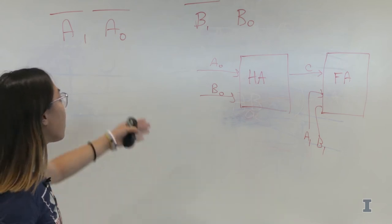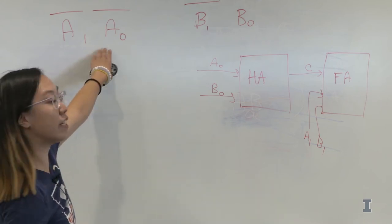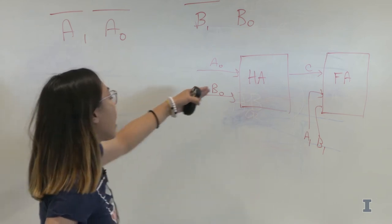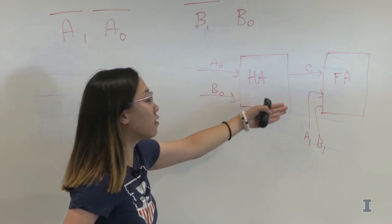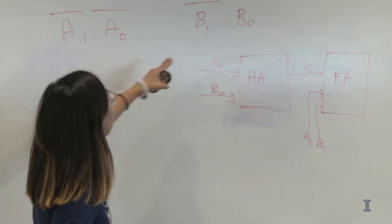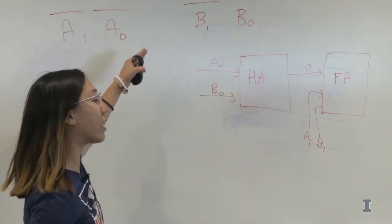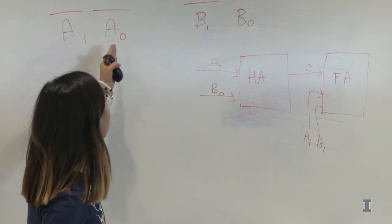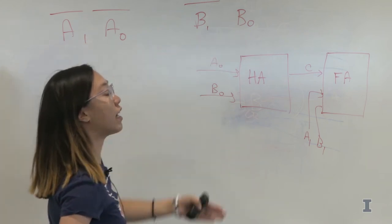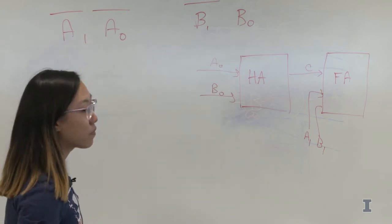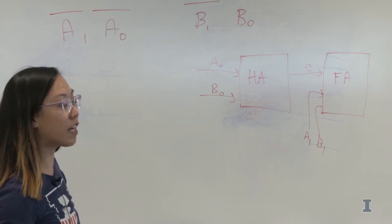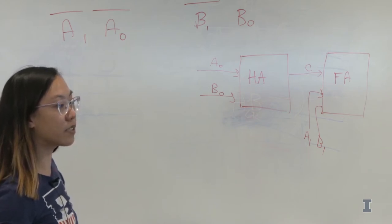Our half adder is only going to take our ones place. The carry is going to go into the full adder, and that's going to add the twos-place digits and whatever excess came from those two — say if we added one plus one.